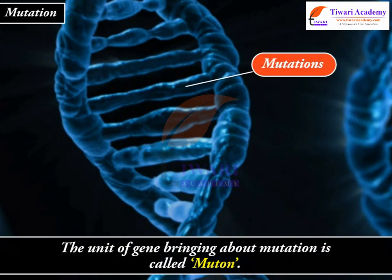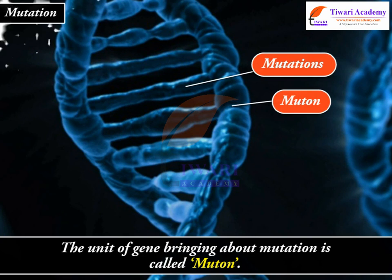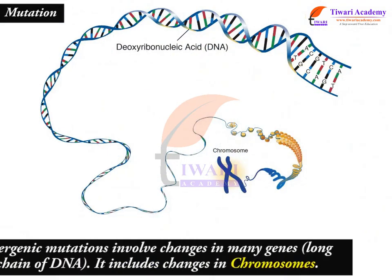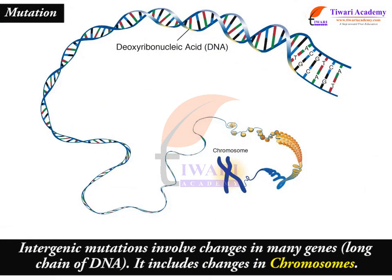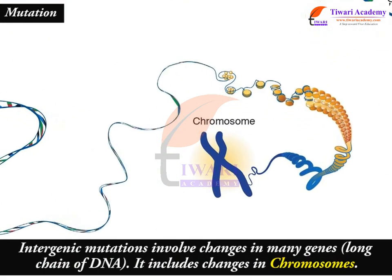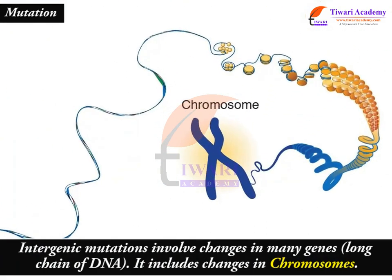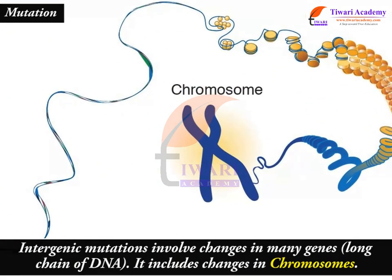The unit of a gene bringing about mutation is called a muton. Intergenic mutations involve changes in many genes and a long chain of DNA. It includes changes in chromosomes.